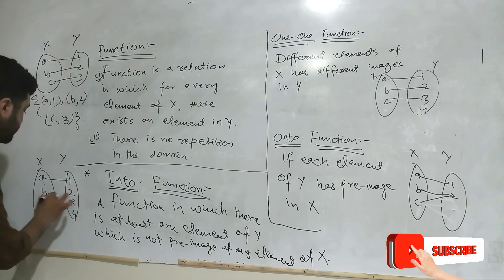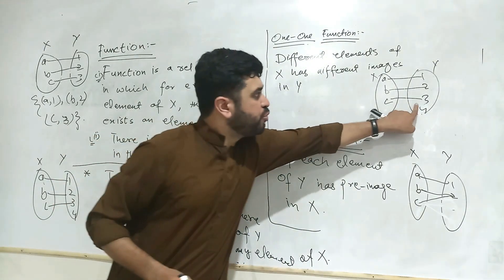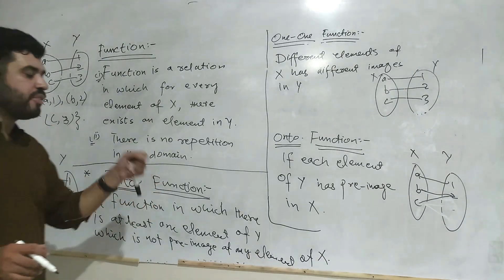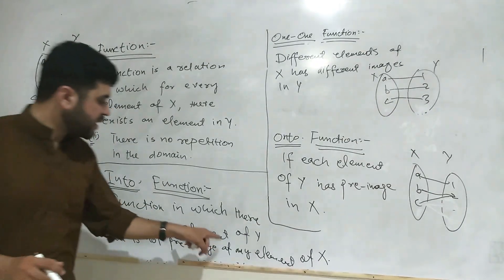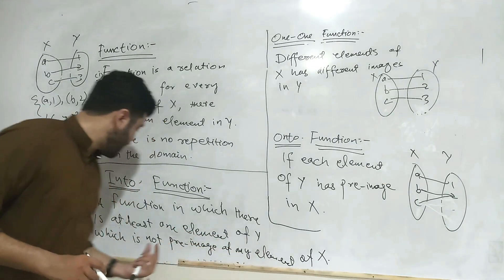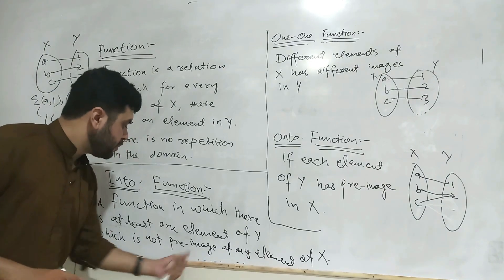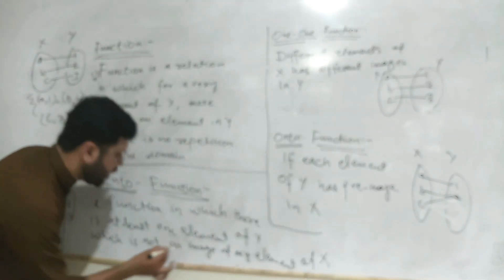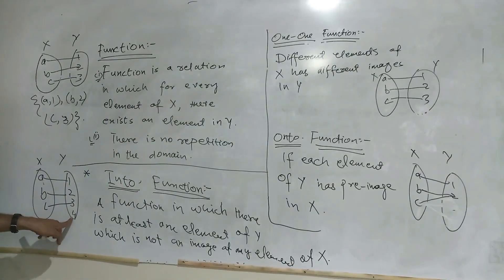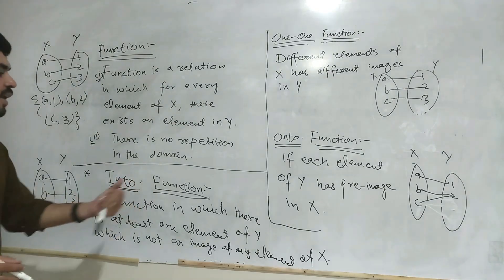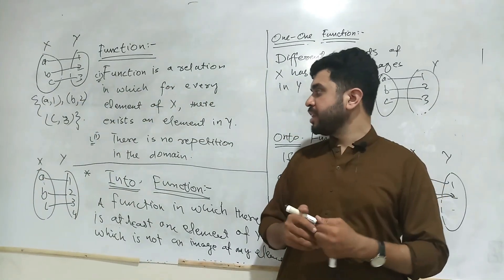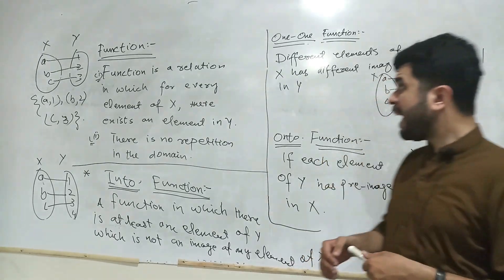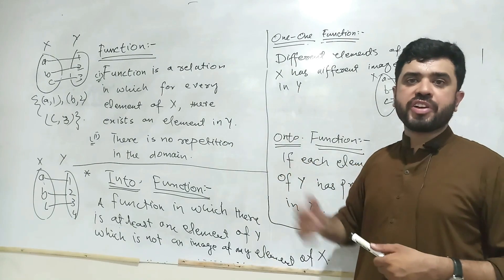If I remove 4 from X it will not affect this function, but if I remove 4 from Y it will surely affect the definition of the into function. The definition says there is at least one element of Y which is not an image of any element of X — so 4 is not an image of any element of X, making this an into function. Further, we will discuss domain and range of a function, how to find the inverse function, and how to find the domain and range of the inverse function.